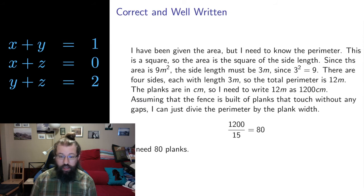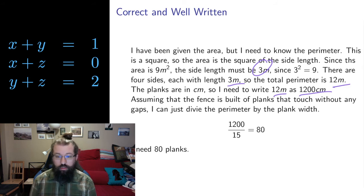Here's a solution that has the same calculations. But they're just all embedded in terms of writing. And this is much better. This tells me how to think through this problem. I've been given the area. I need to know perimeter. This is a square. The area of the square is the square of the side length. The area is 9 meters squared. While 9 is 3 squared. So each side length must be 3 meters. So that's where I get this 3. There are 4 sides each of 3 meters. So the total perimeter has to be 12. But the planks were given in centimeters. So I need to write 12 as 1200. Writing meters in terms of centimeters multiplied by 100. So then I have 1200 centimeters. Each plank is 15 centimeters. I can just divide to get a total of 80 planks.